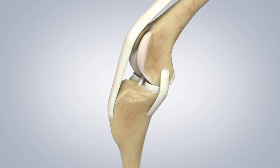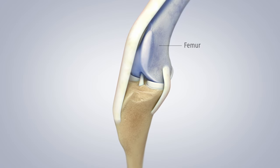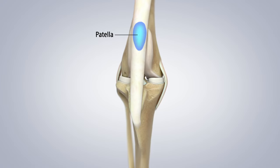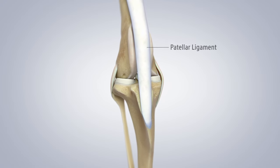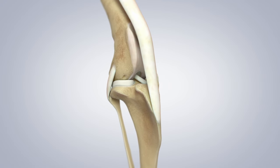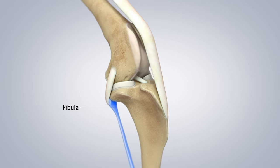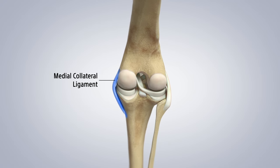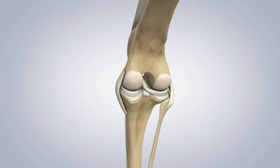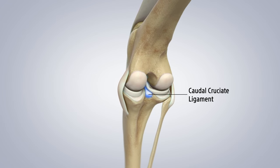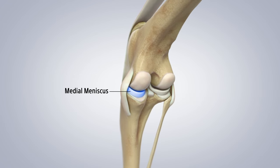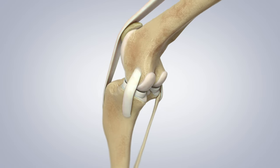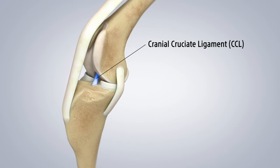For the anatomy, first the femur in blue, next the tibia, the patella, the patellar ligament, the fibula, and from the back of the knee we'll look at the medial collateral ligament, lateral collateral ligament, the caudal cruciate ligament, and then the medial and lateral menisci, and our main focus, the cranial cruciate ligament.